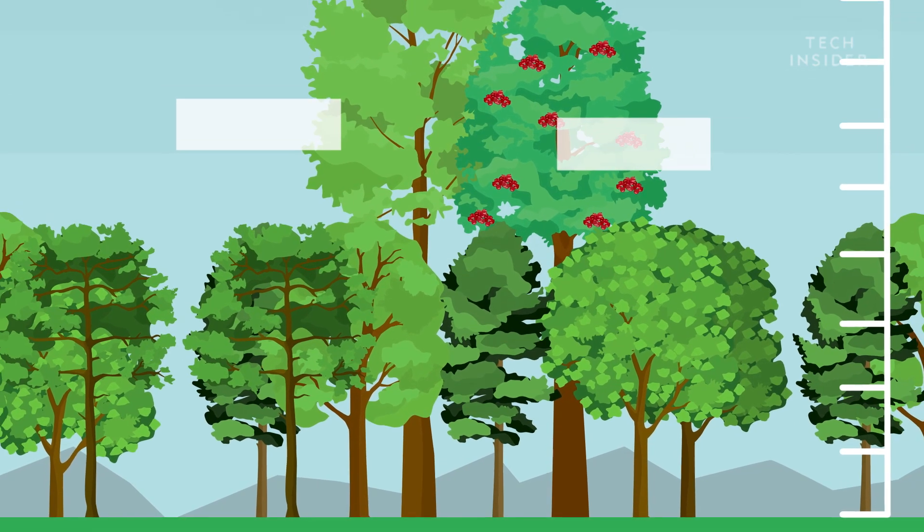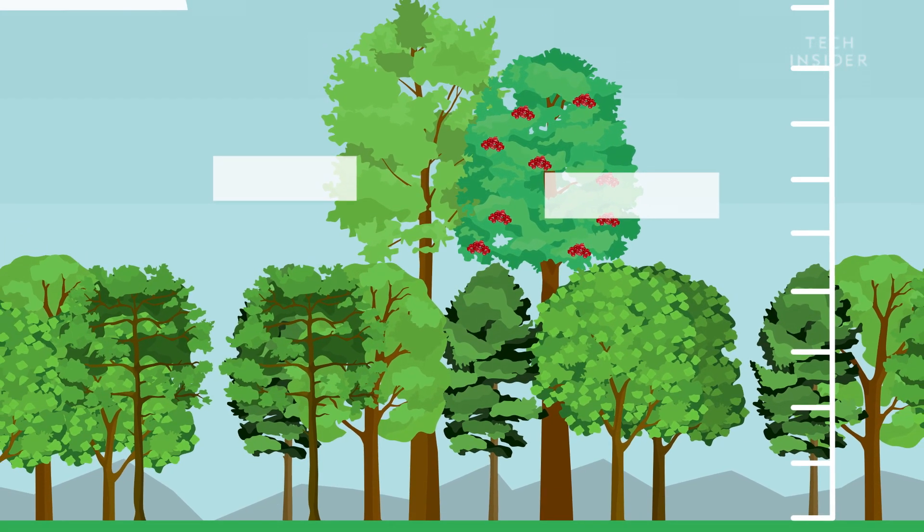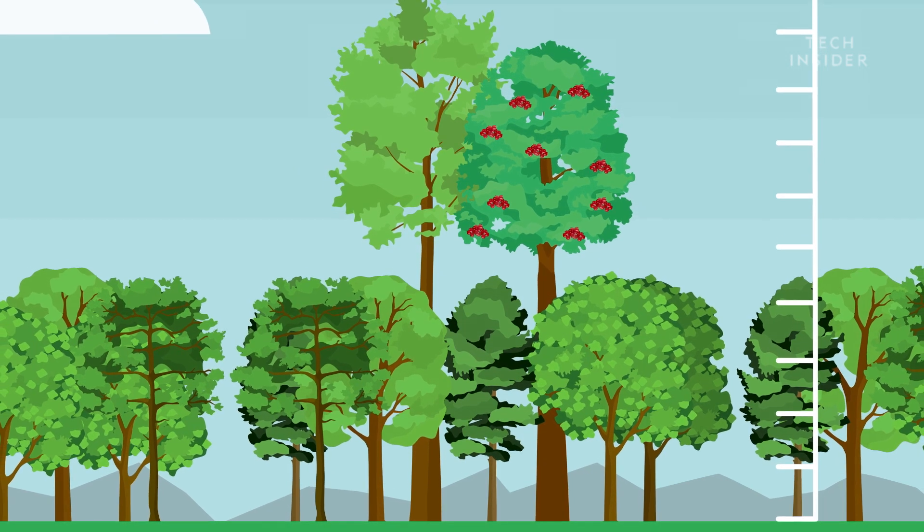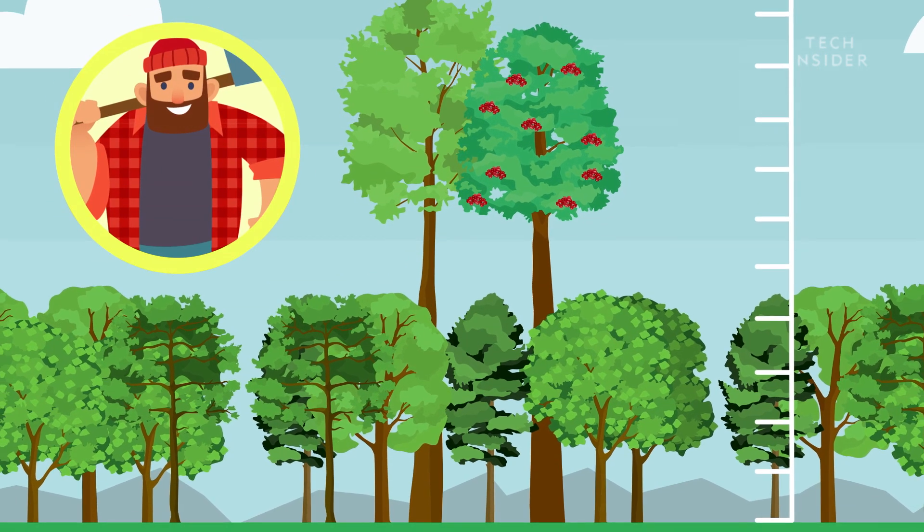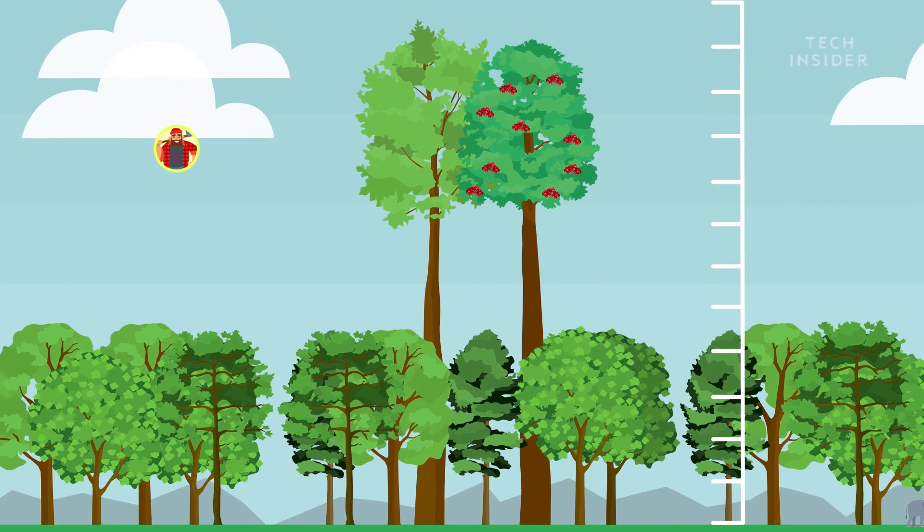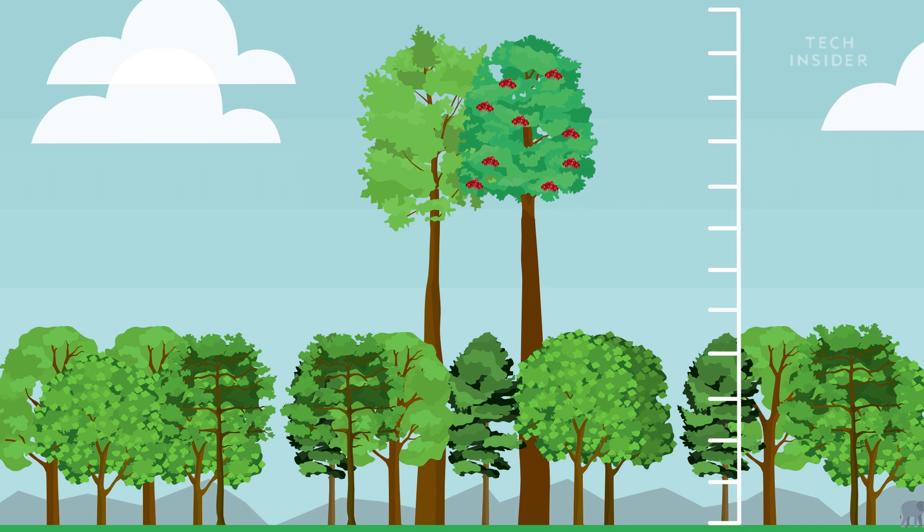Redwoods are renowned as the tallest lifeforms on Earth. But some experts think that mountain ashes could grow even taller if humans would stop cutting them down. In fact, the tallest mountain ash was just one meter shorter than the tallest redwood.